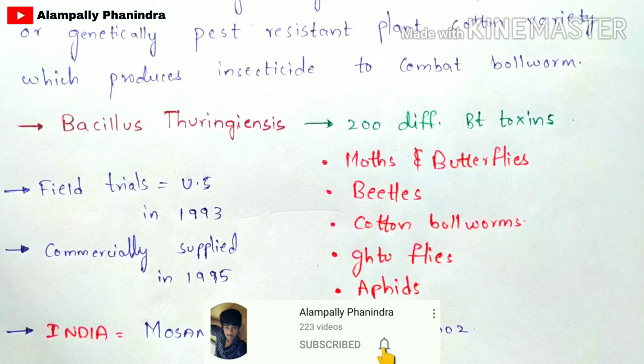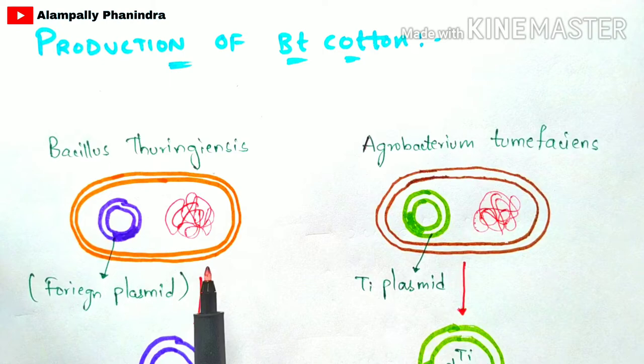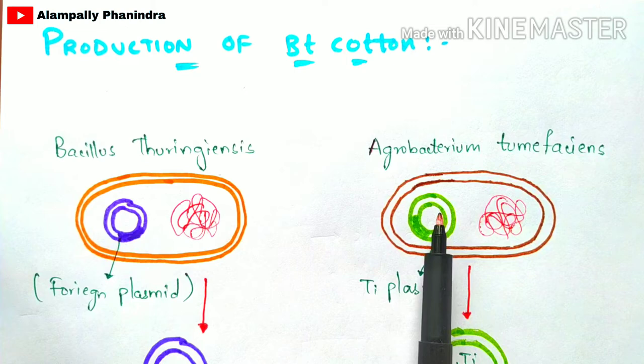Now let us discuss the production of BT cotton — the whole procedure of how BT cotton has been developed in the lab. After that, we are going to discuss the advantages of BT cotton. We are going to take two bacteria: Bacillus thuringiensis and Agrobacterium tumefaciens.